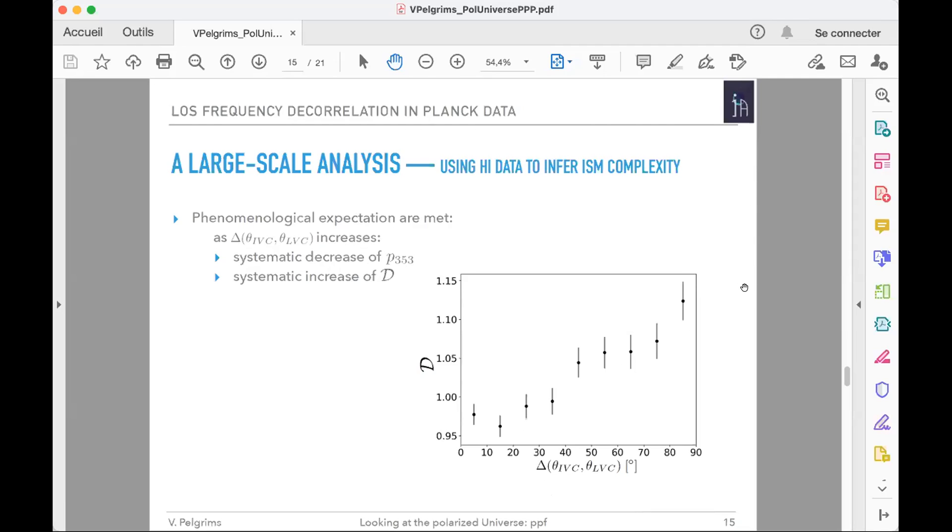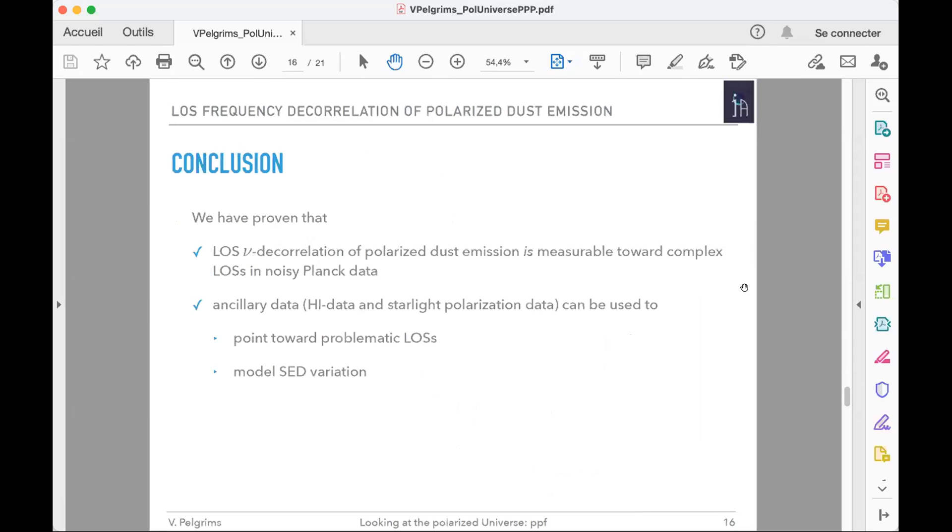As a conclusion, we have proven that line-of-sight frequency decorrelation of polarized dust emission is measurable toward complex lines of sight in the Planck data. As a corollary, we have proven that ancillary data can be used to point out problematic regions in the sky and can also be used to model SED variation. Thank you.